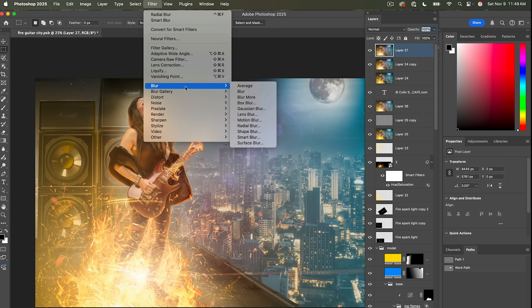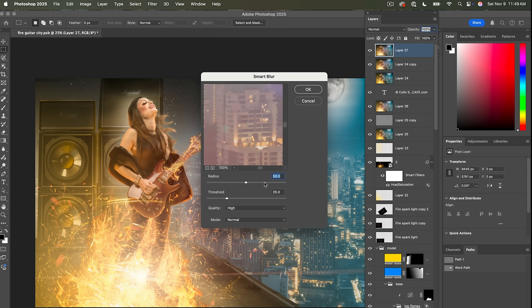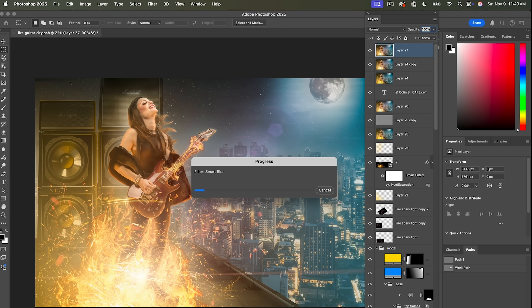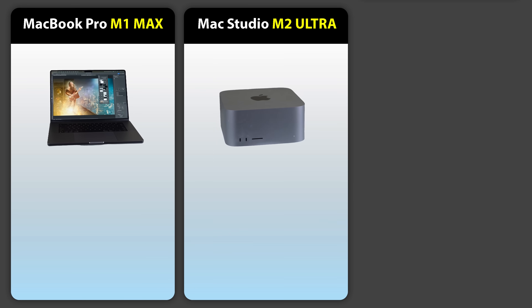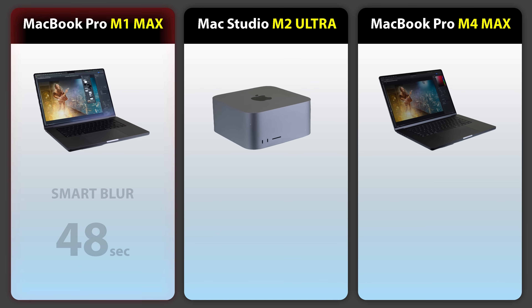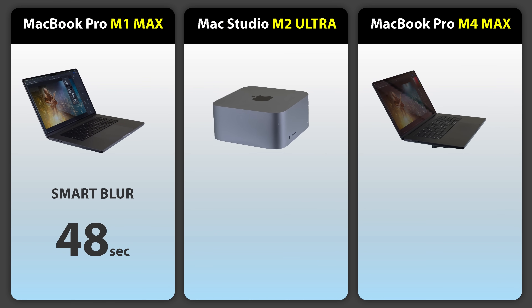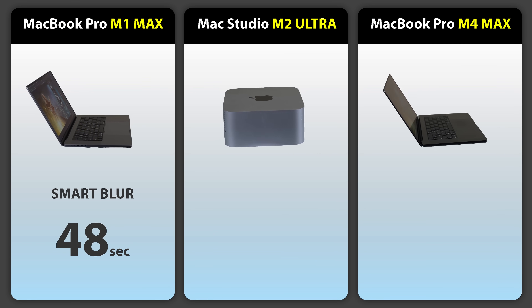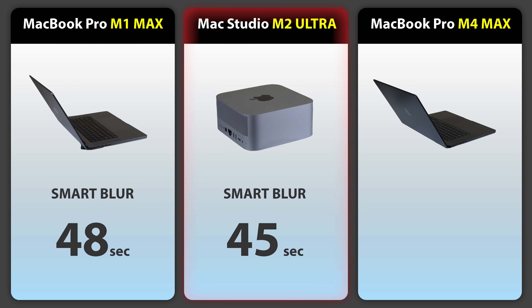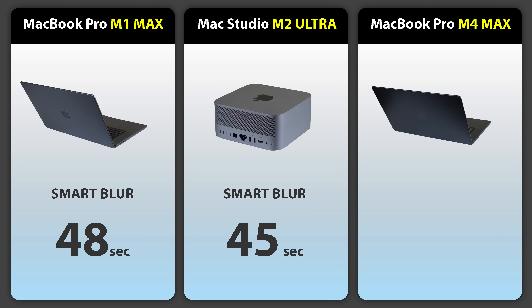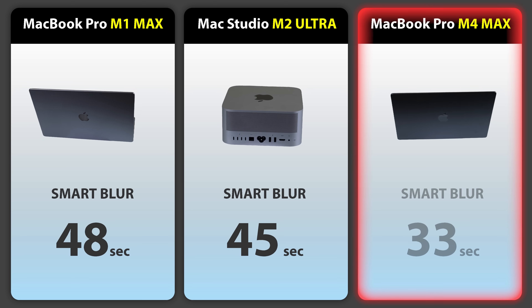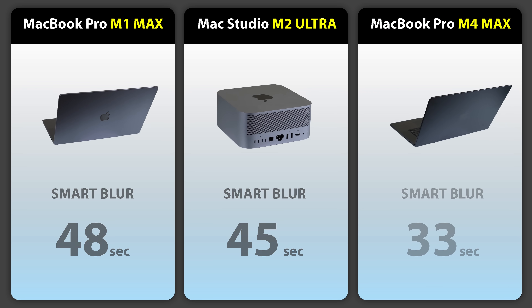Then we're going to create a stamp visible layer on the top and apply a smart blur — radius 50, threshold 25, high quality. This is a really intensive process. The filtering with the smart blur: M1 MacBook Pro took 48 seconds, M2 Mac Studio 45 seconds, and the M4 MacBook Pro wins at 33.68 seconds.